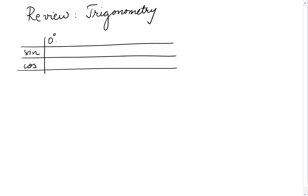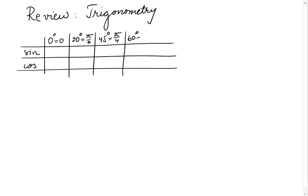The angles are: 0 degrees or 0 radians, 30 degrees or pi over 6, 45 degrees or pi over 4, 60 degrees or pi over 3, and we'll stop at 90 degrees or pi over 2.